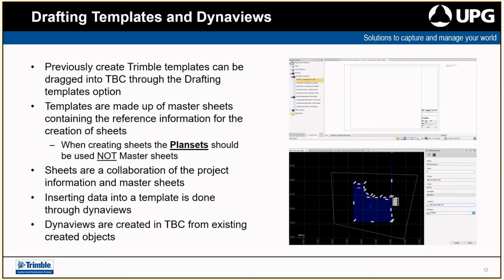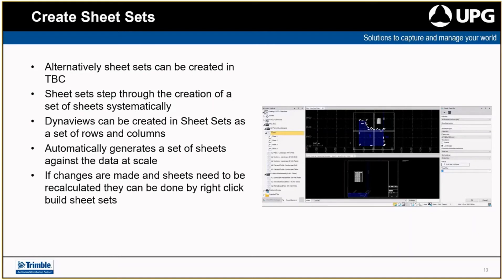Sheets can be created automatically in TBC. You can create a sheet set, which allows you to specify a grid over your data that automatically creates DynaViews for the sheet sets and publishes that information collectively. If you're creating corridors, sheet sets can become quite detailed, giving you all the templates, profiles, and plan views in one collaborated effort. You don't have to create individual sheets for each bit of data - you simply do a create sheet set and it knows what data to pull. If you need to update something, just update the raw data and the DynaViews will update automatically.